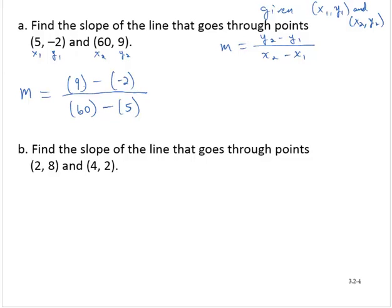Going through the arithmetic, 9 subtract negative 2 is 9 add 2, which is 11. 60 subtract 5 is 55. 11 and 55 share a factor of 11, so let me divide both numerator and denominator by 11. And so that would leave me with 1 fifth. So the slope of this line through those two points is 1 fifth.